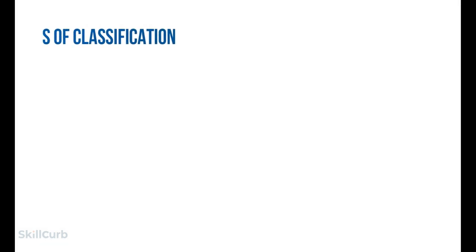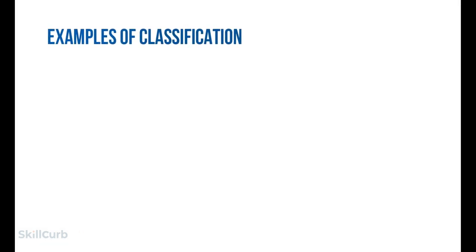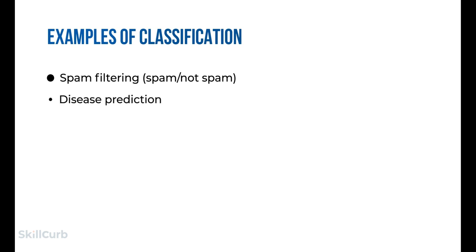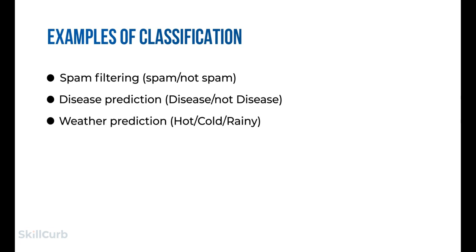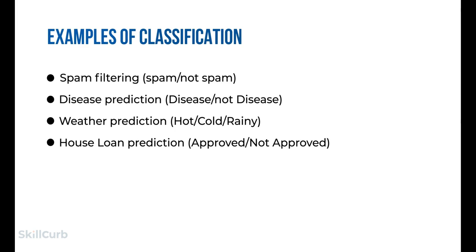Some examples of classification problems are: spam filtering, where email is either spam or not spam; disease prediction, where a patient can either be diagnosed with a disease or not; weather prediction, where weather could be hot, cold, or rainy; and house loan prediction, where the loan is either approved or not approved.